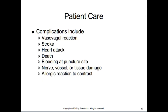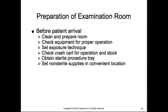Complications include vasovagal reaction, stroke, heart attack, and in rare cases death on the table — patients sometimes come in actively having a heart attack and cannot survive. Other complications include bleeding at the puncture site, nerve or vessel damage, and vessel perforation. During ablations, the vagus nerve has been accidentally ablated, leaving patients on a ventilator for life. There are also contrast reaction risks. Before the patient arrives, clean and prep the room, check the equipment, set exposure techniques, and check the crash cart.